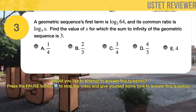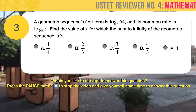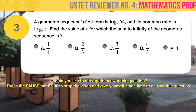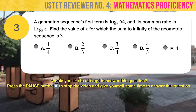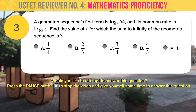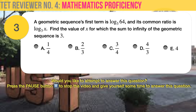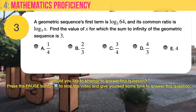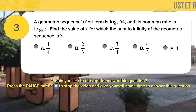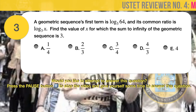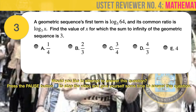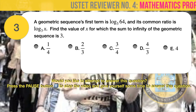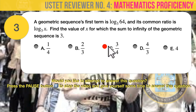Question number 3. A geometric sequence's first term is logarithm base 3 of 64, and its common ratio is logarithm base 3 of x. Find the value of x for which the sum to infinity of the geometric sequence is 3. A: one-fourth. B: two-thirds. C: three-fourths. D: four-thirds. E: four. The correct answer is C, three-fourths.